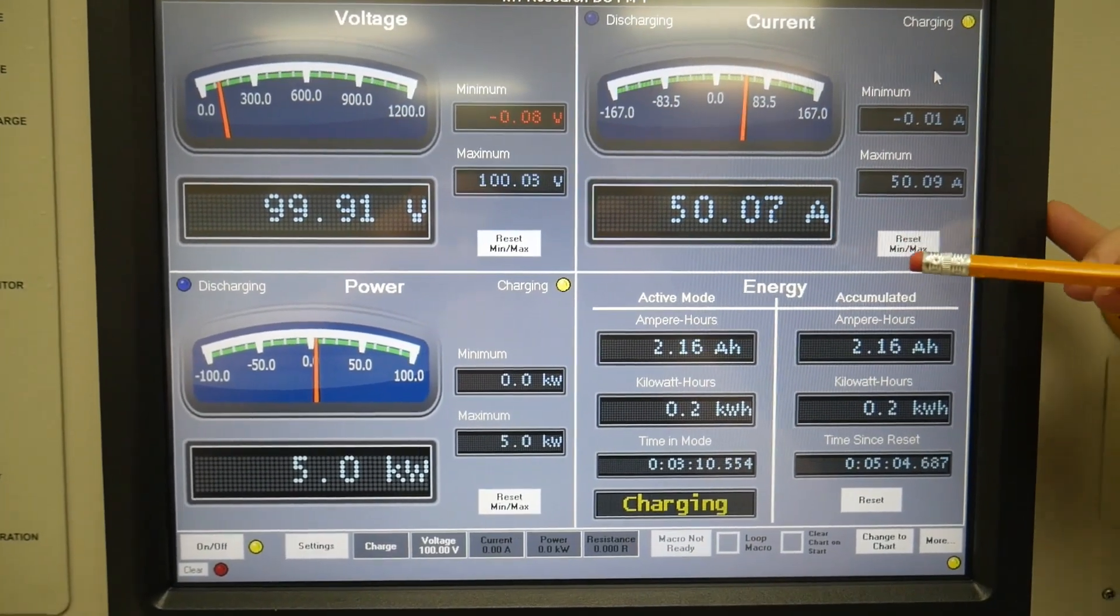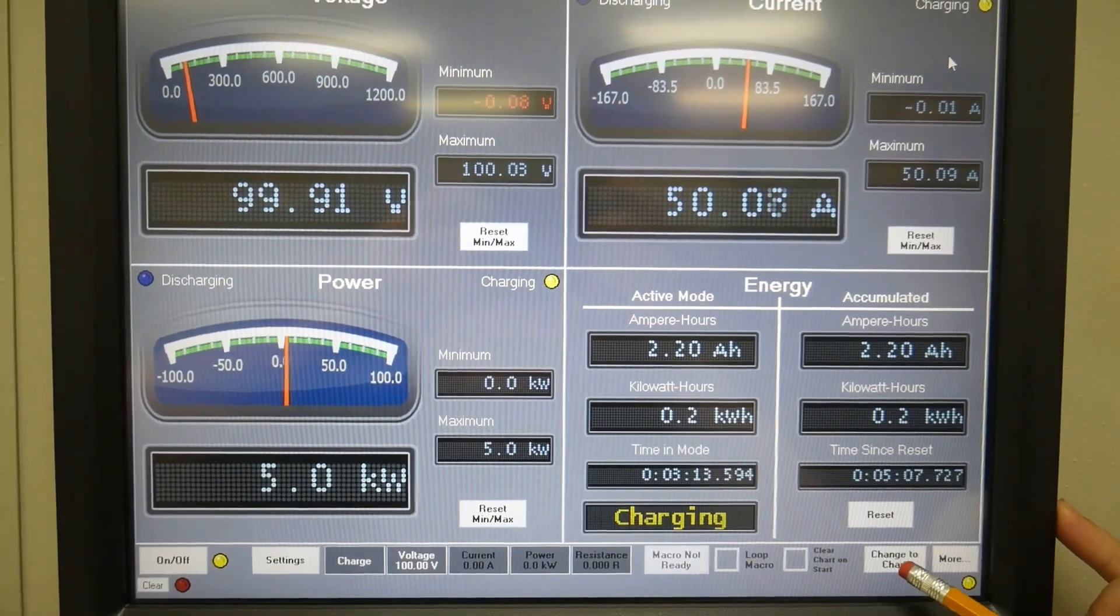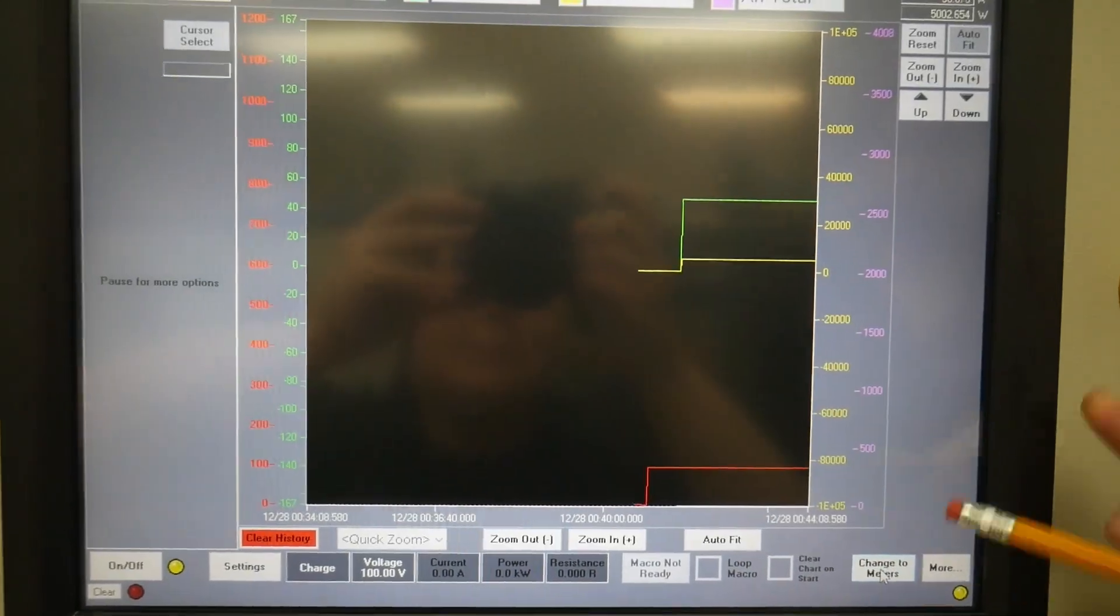Currently we're on meter mode, but you can change it to chart mode by pressing this button on the bottom right corner right here.